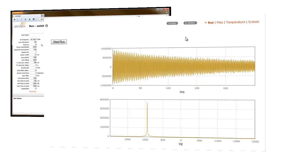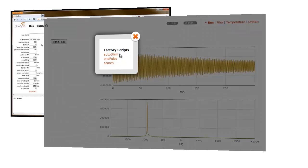If this isn't the AutoShim script, then navigate over to the Scripts button and select it. A pop-up window will appear displaying three factory default scripts: AutoShim, OnePulse, and Search. We want to select the AutoShim script.